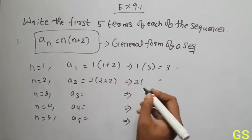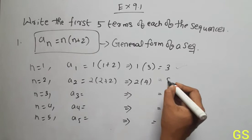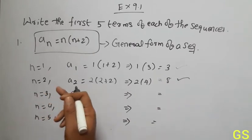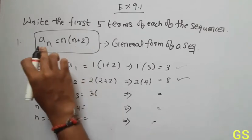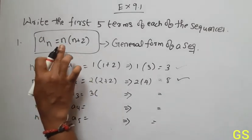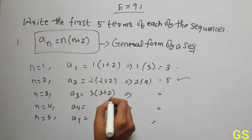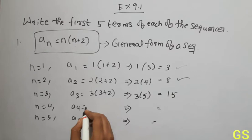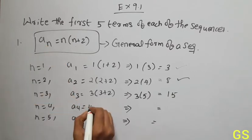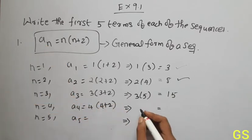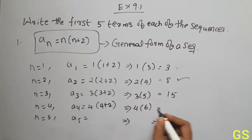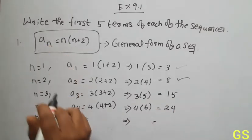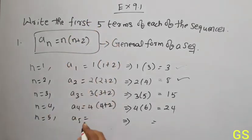So 2 into 4 is 8, the second term. Next, third term: n is equal to 3. a_3 is equal to 3 into 3 plus 2, so 3 plus 2 is 5. Three fives are 15. Next, n is equal to 4, so 4 into 4 plus 2. Four plus 2 is 6, four sixes are 24. Next, n is equal to 5: 5 into 5 plus 2, 5 into 7, five sevens are 35.